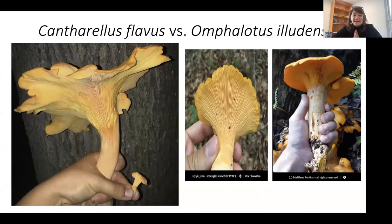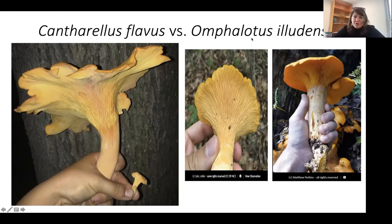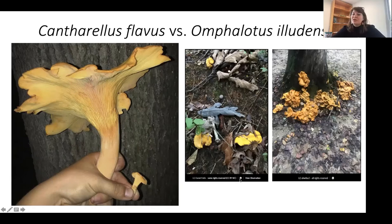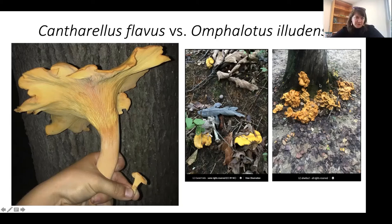Knowing what a mushroom grows on is really important if you want to know how to eat it. Here are two different species - one will make you very sick, but the other is absolutely delicious and tastes like apricots. This is the jack-o'-lantern mushroom called Omphalotus eludens, and this is the chanterelle. The chanterelle is in association with tree roots, so it will always be coming out of the ground. The jack-o'-lantern only grows on wood, so you'll never find one coming right out of the soil, and you can use this to tell them apart.